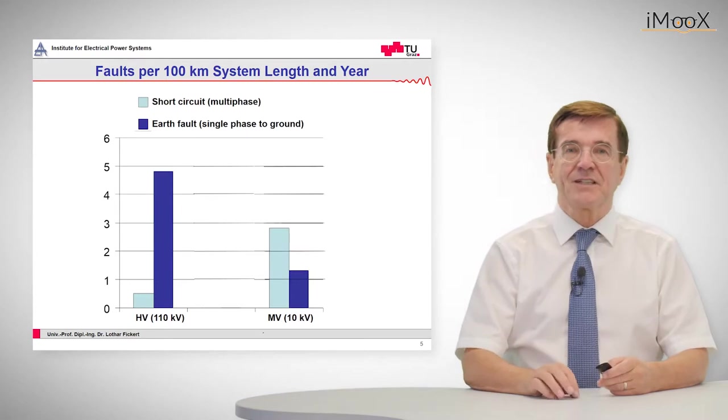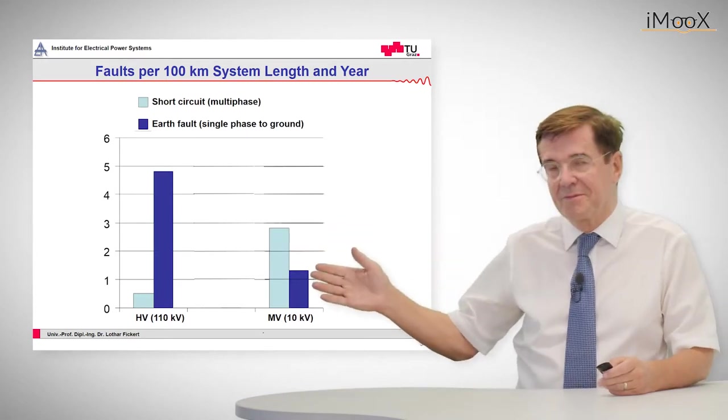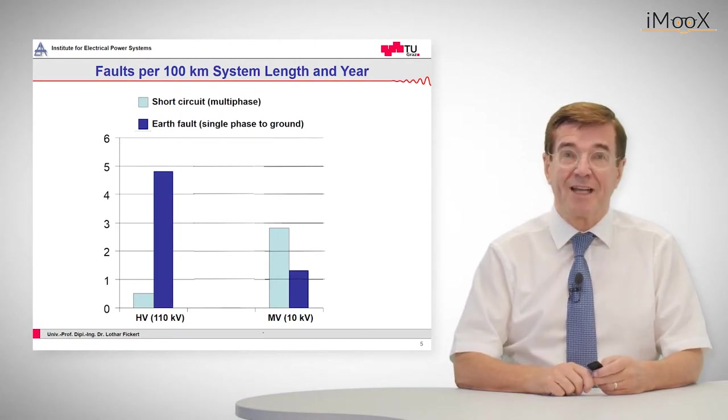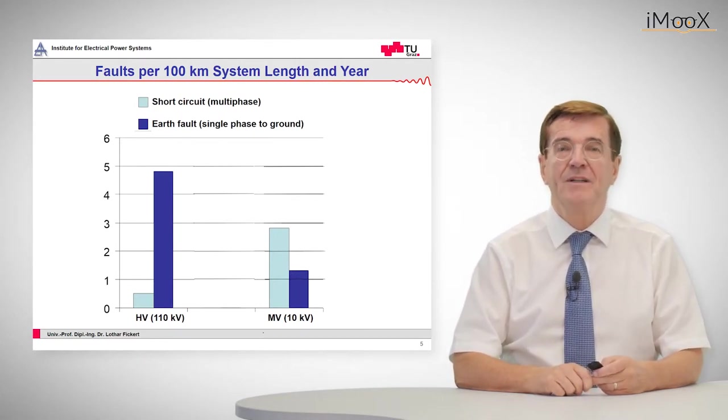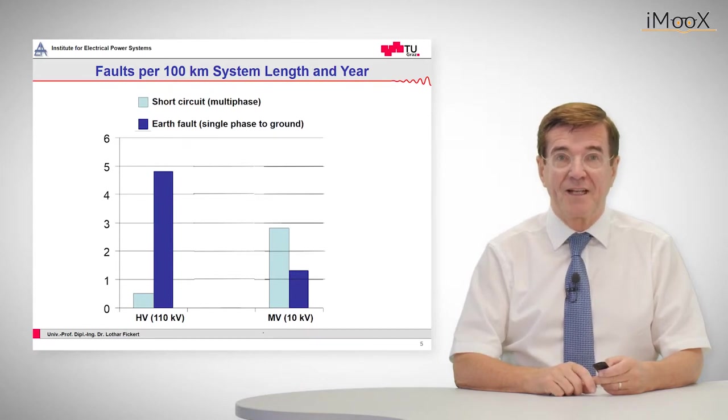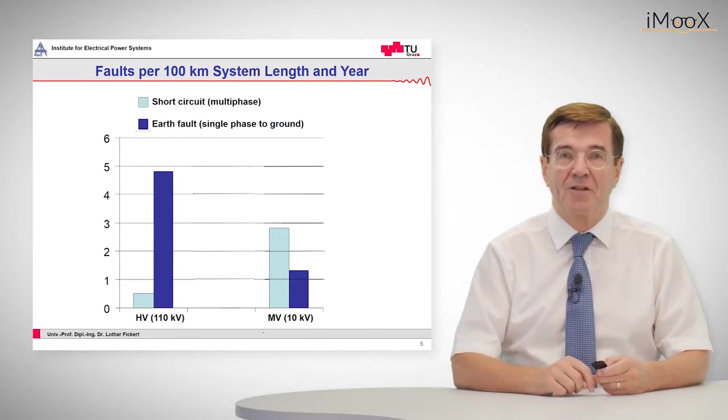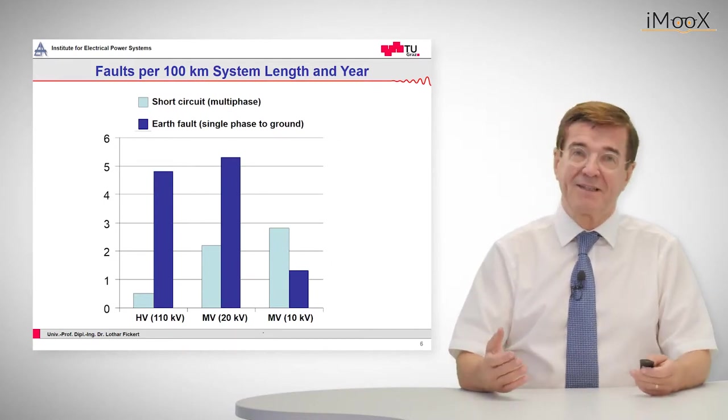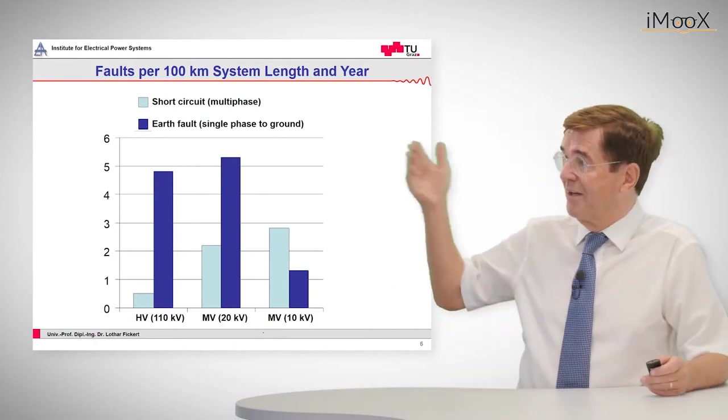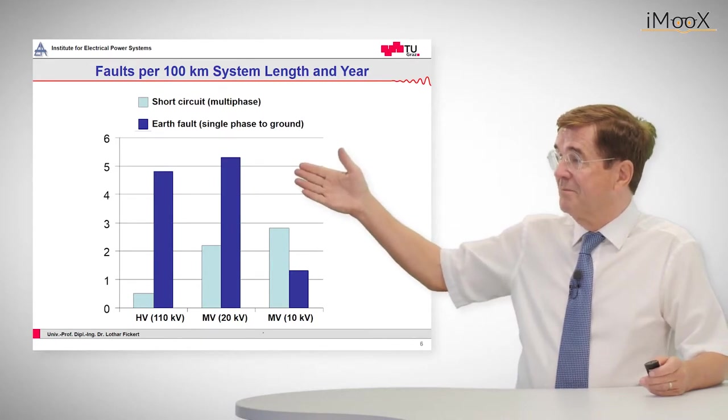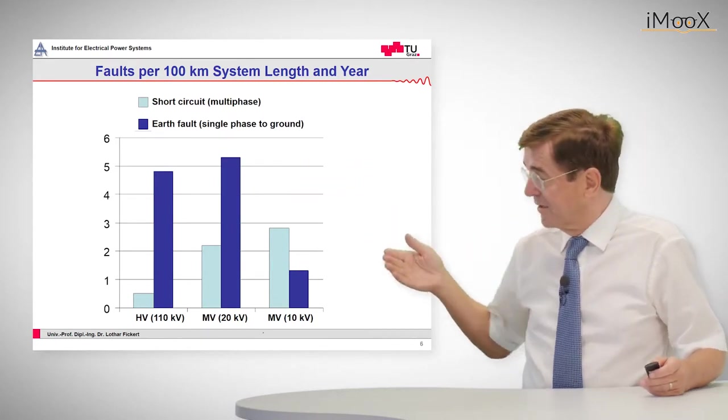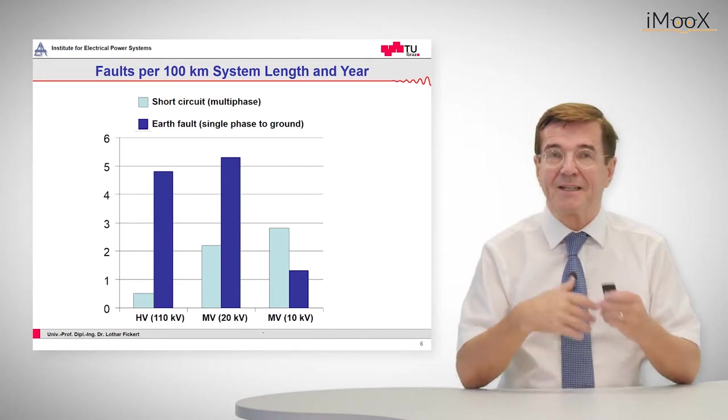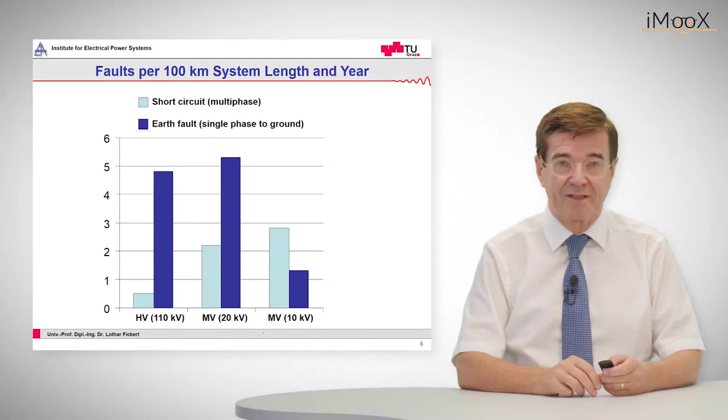In contrast to that, in medium to low voltage, medium voltage systems, for example cable systems, we have more short circuits than earth faults. And in the typical medium voltage range of 20 kV, we have both bad things from both sides. We have from the high voltage side the big proportion of earth faults and from the low voltage side a high proportion of short circuits. So the 20 kV level and the medium voltage levels are very fault intensive.